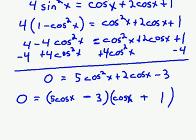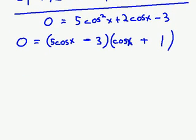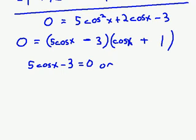We have the right factorization. Let's set both factors equal to 0. I'll get 5 cosine x minus 3 equals 0, or cosine x equals negative 1.